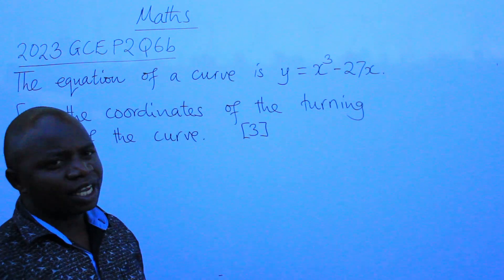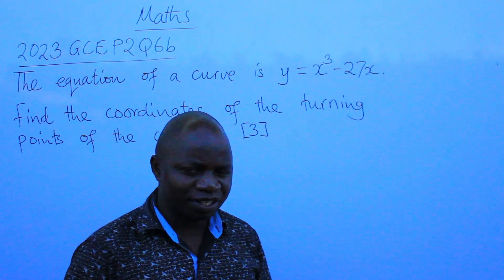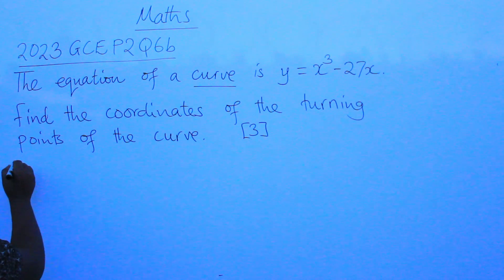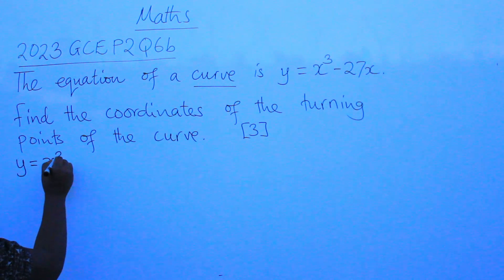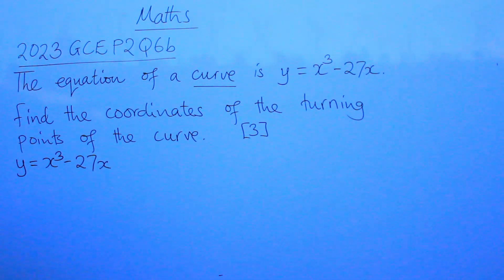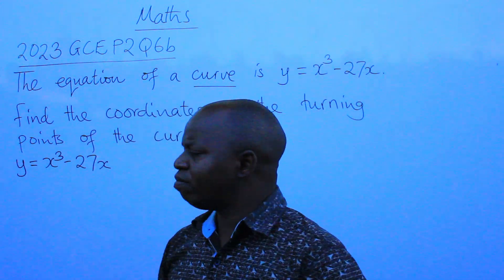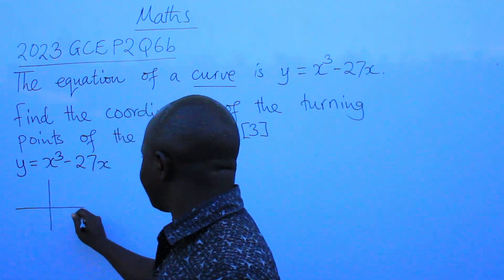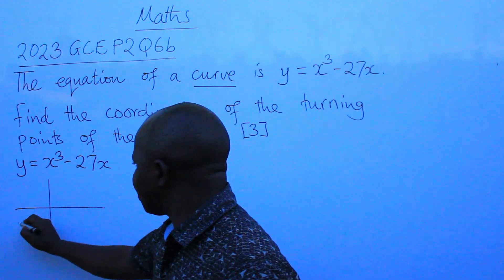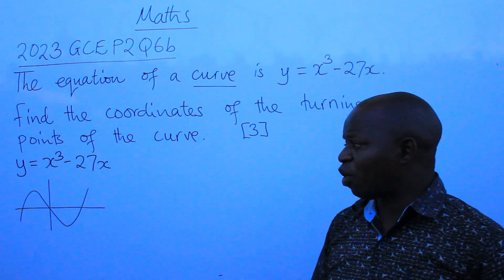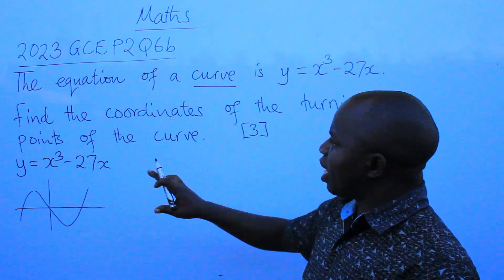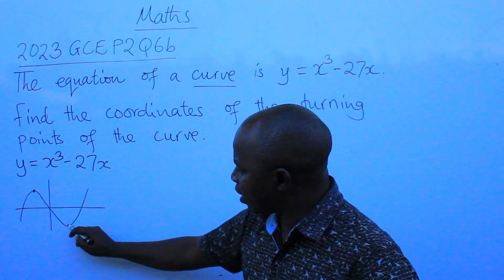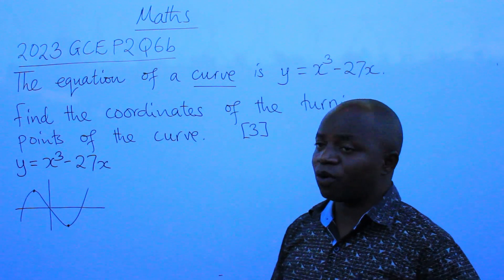This question is from calculus — application of calculus. We have a curve here: y equals x to the power 3 minus 27x. If we put it in diagram form and sketch it, the curve will look like this. The question is asking us to find the coordinates of the turning points, meaning the coordinates of these two points on the sketch.